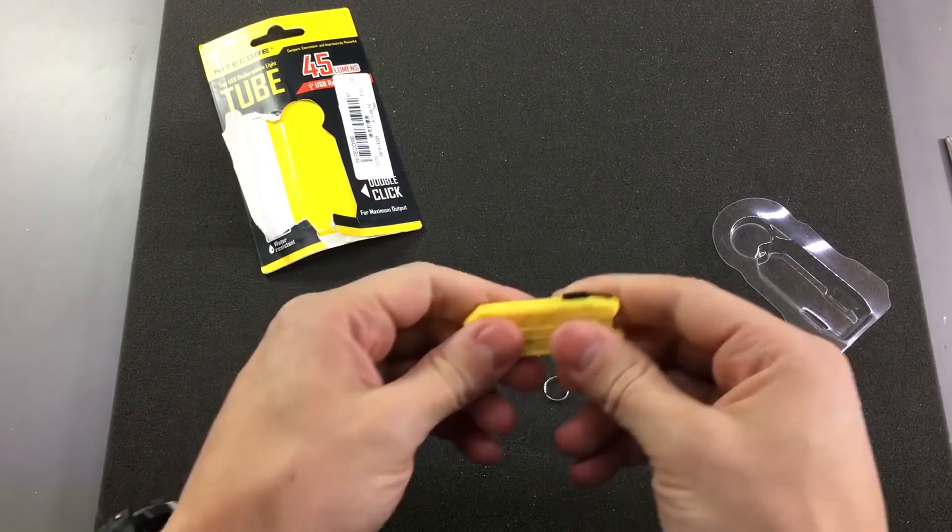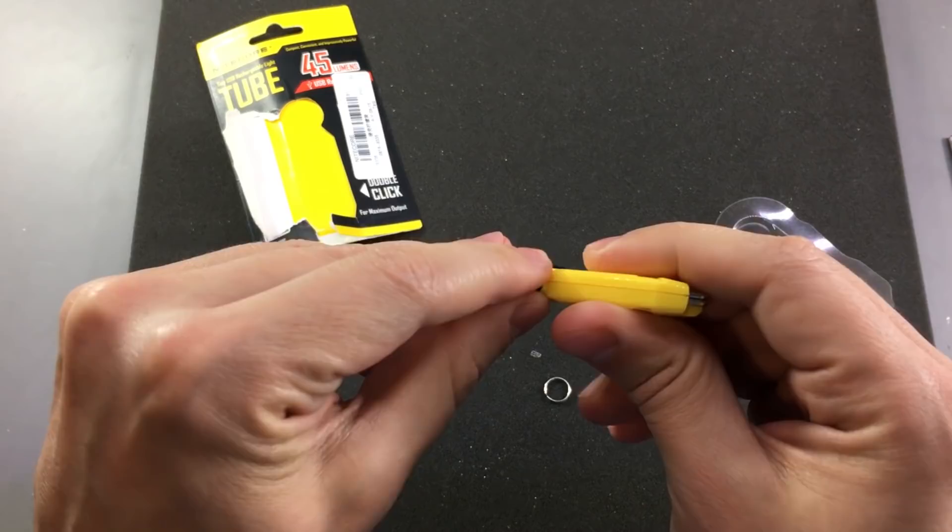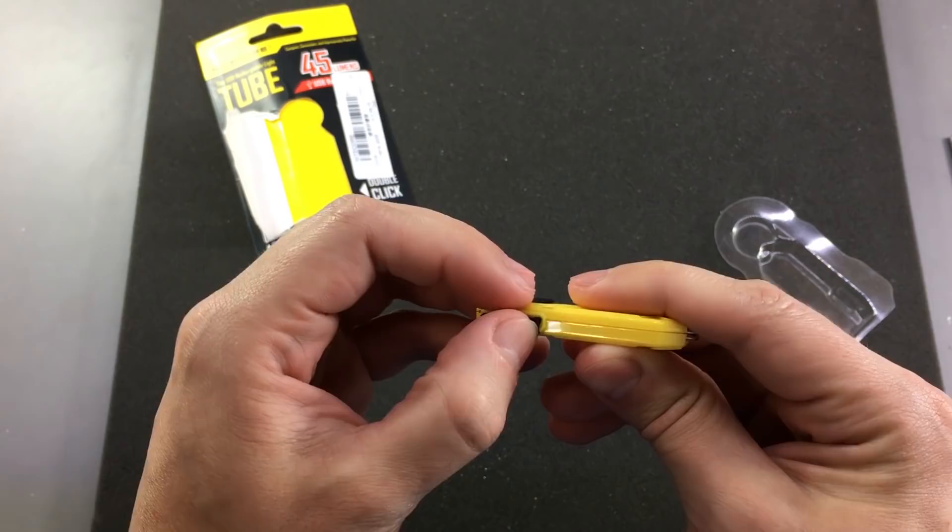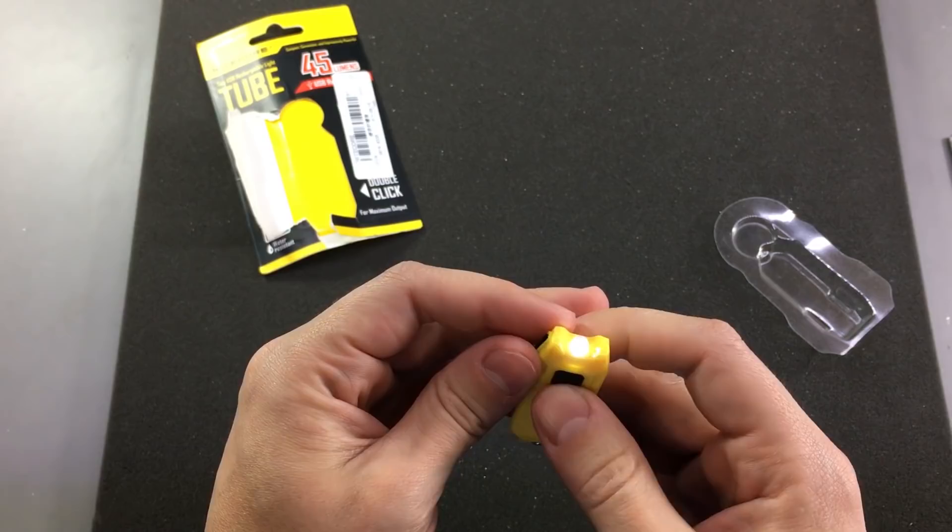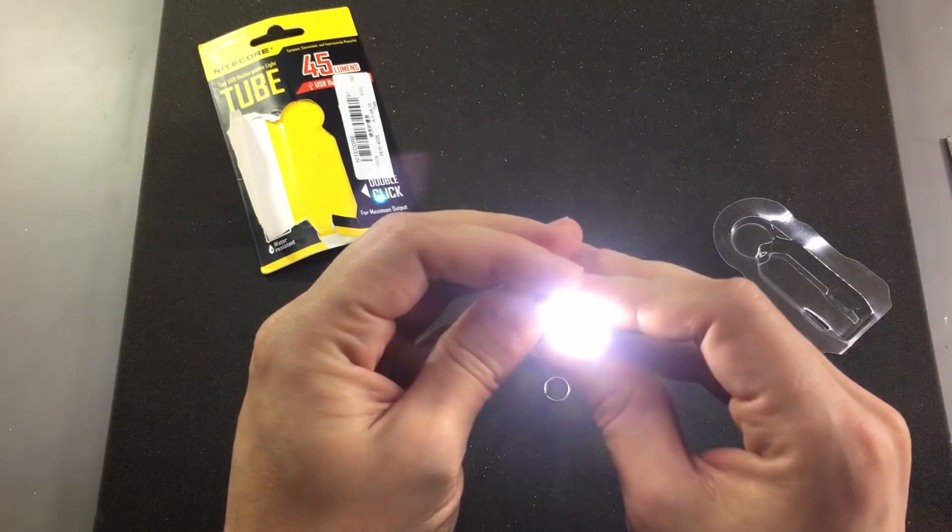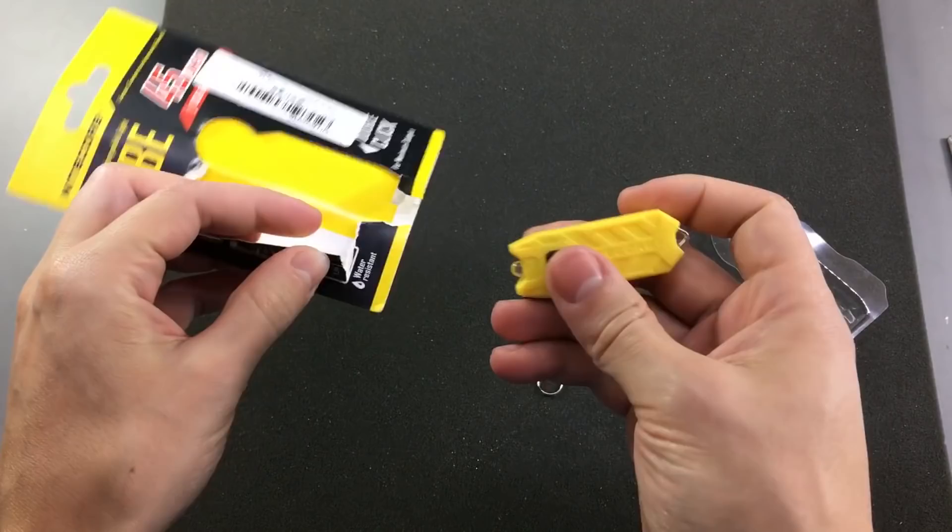So the ring flew away, but that's okay, I will find it later. So here is the small micro USB for charging the internal battery with a nice rubber seal. Here is the on-off button. This is the high brightness setting. So it's like I said, pretty nice compact flashlight.